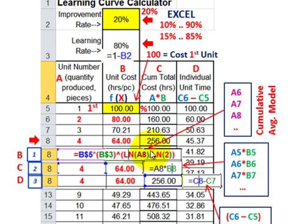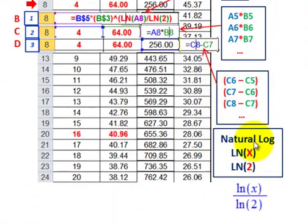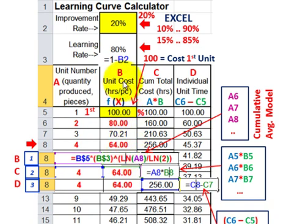That exponent is Ln of the current unit number (A8) divided by the natural log of base 2 — Ln(2). The Ln(2) in the denominator is always the same; it doesn't change. So the full exponent is Ln(x) divided by Ln(2), where x is the unit number for whatever row you're dealing with. Make sure you get all your parentheses correct.